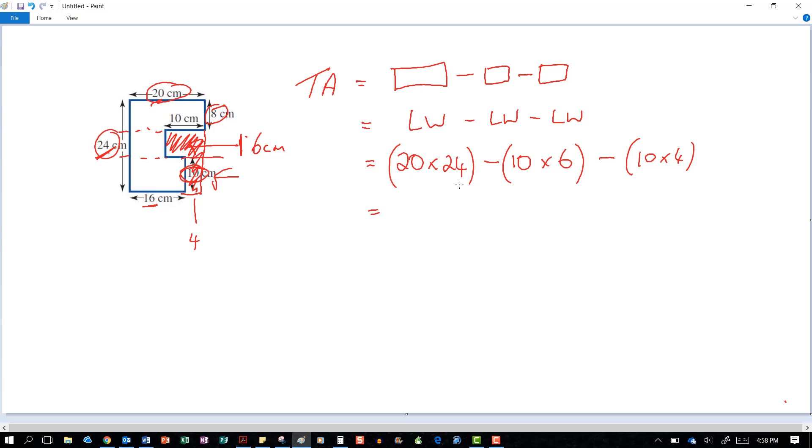Now we can do this in steps before simplifying all of this. So we have 20 times 24 is 480, minus the 60, minus the 40. So it's minus 100, so 380. Don't forget to put your units in centimeters squared.